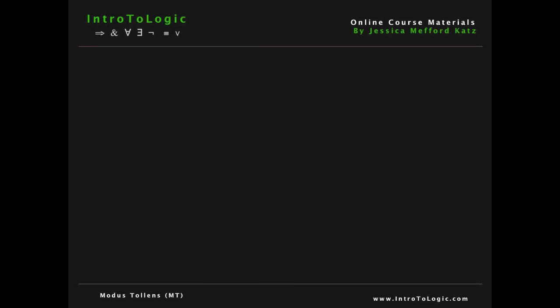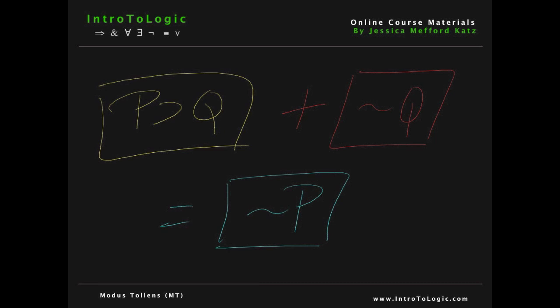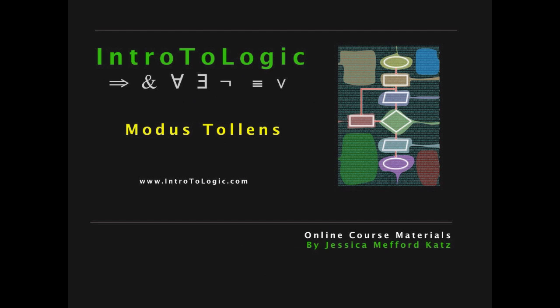To summarize, modus tollens entails that if we have a conditional and the negation of the consequent of the conditional, then we can derive the negation of the antecedent of the conditional — and it is as simple as that. This has been an Intro to Logic video on the topic of modus tollens. Be sure to keep practicing, and we will see you next time.